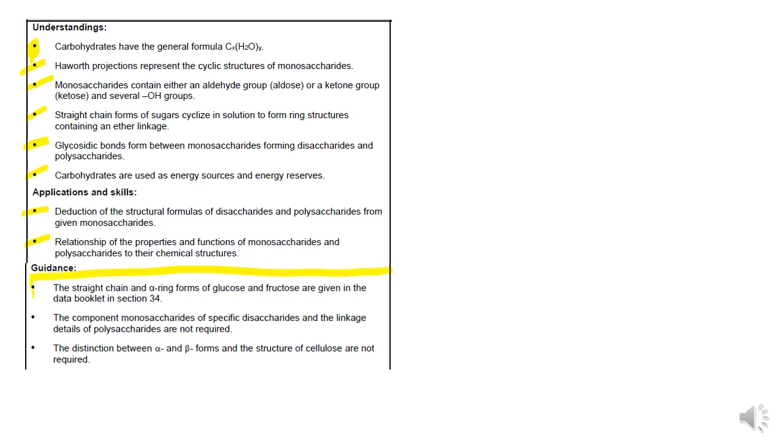These are important particularly for the bio people because bio people go into a bit more detail on, for example, 1,4 glucose polymers as opposed to some of the other types. You don't need to know the difference between the alpha and beta forms of cellulose as well.